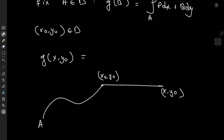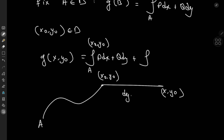So g(x, y₀) can be expressed as the integral from a to (x₀, y₀) of p dx + q dy, plus a second integral. Since this is a horizontal line, dy = 0, and this second integral can be expressed as the integral from x₀ to x of p(t, y₀) dt.